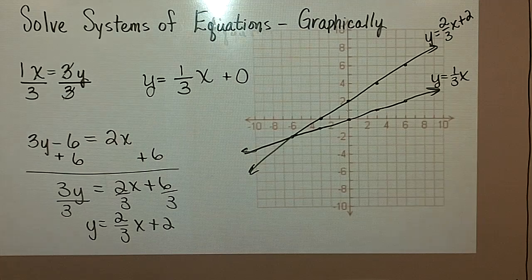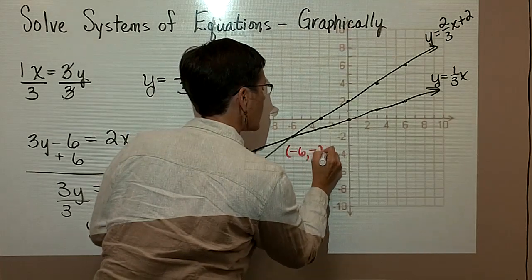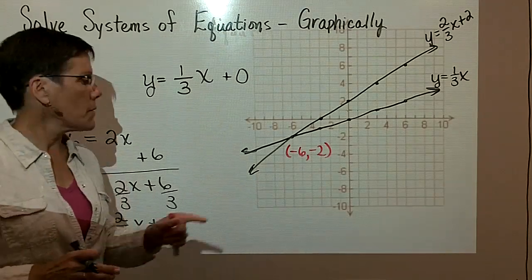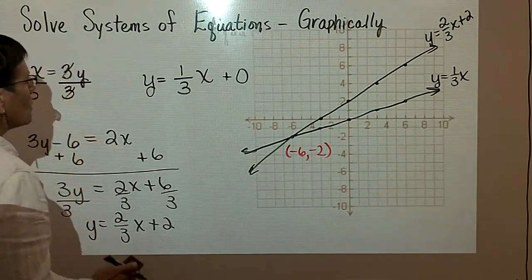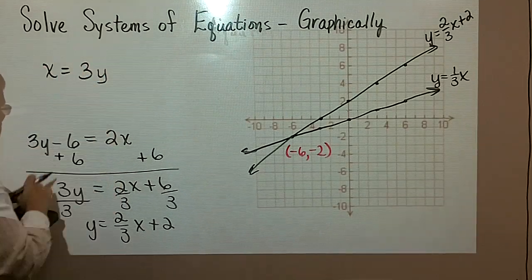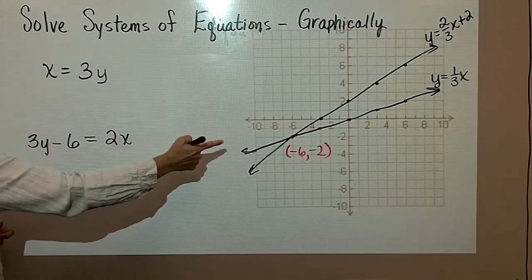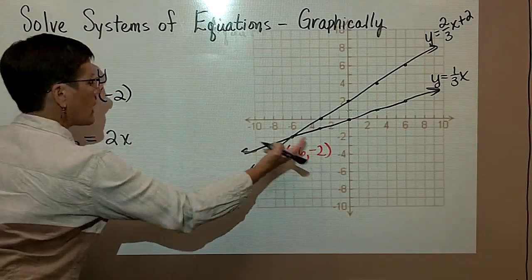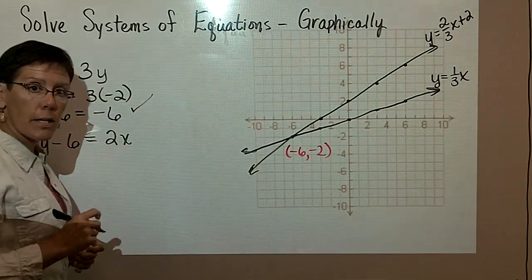And it looks like those two linear equations intersect at the point where x is a negative 6 and y is a negative 2. And the last thing I really should do when I solve a system of equations is to take those two values, x is a negative 6 and y is a negative 2, and put it into the original system. So I'm going to go ahead and take a minute now here to erase this. This was x equals 3y. That was the original equation. And here's the original equation for the second one in the system. And I'm going to plug these values in. So when x is a negative 6 and y is this negative 2, I just want to know if this negative 6 equals that negative 6, if I get a true statement, and it does.